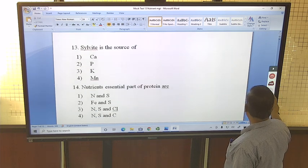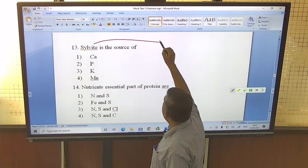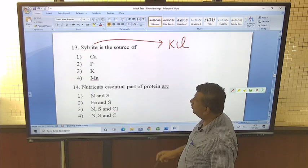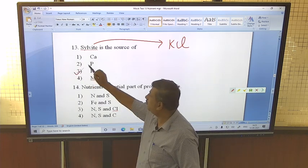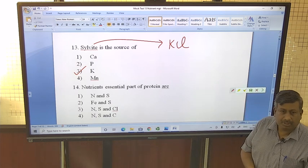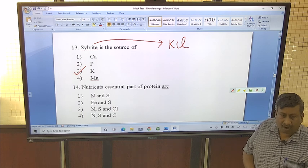Sylvite is source of - sylvite is a mineral and this is mainly potassium chloride mineral. Definitely it is source of potassium. Sylvite is mainly used for refining purpose for manufacturing of muriate of potash.